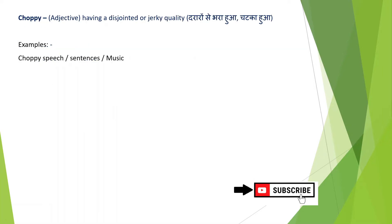I will move on to the next slide. Next word is choppy. Choppy is also an adjective having disjointed or jerky quality. Let's see how we can use this word in a sentence. Choppy speech, choppy sentences, choppy music. You can use this word in a sentence: choppy music, choppy speech.